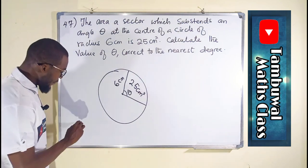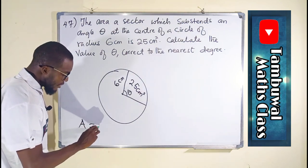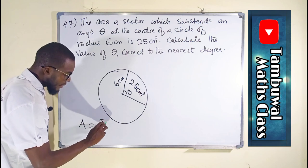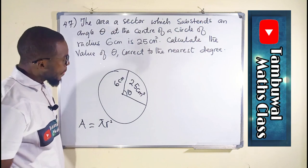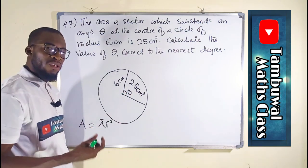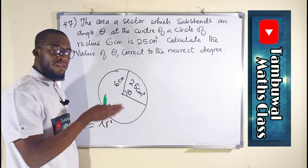Remember the formula for calculating the area of a circle is equal to pi r squared for the total circle. But we are talking about a sector. A sector is just a portion in a circle.